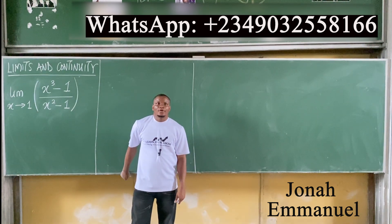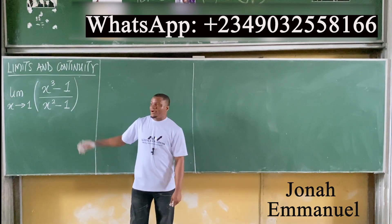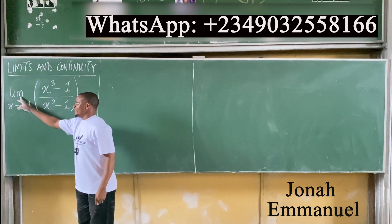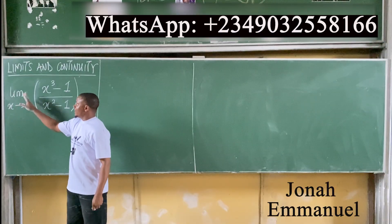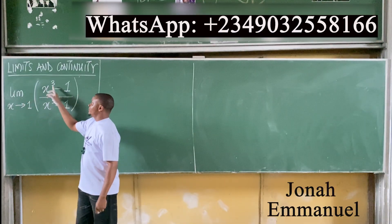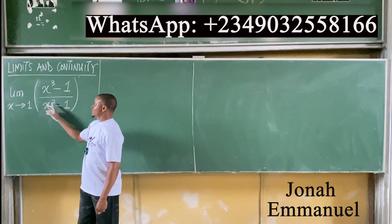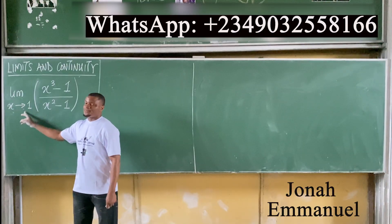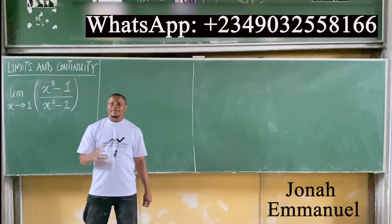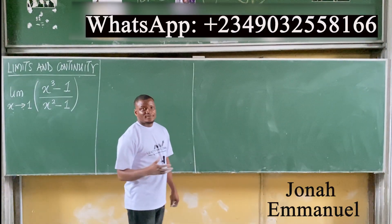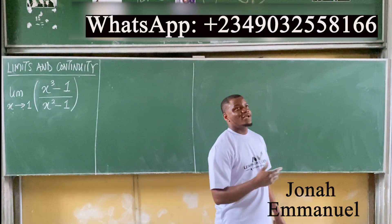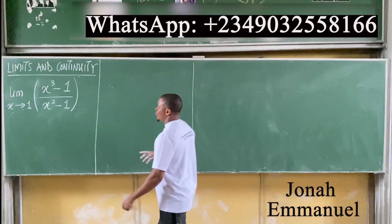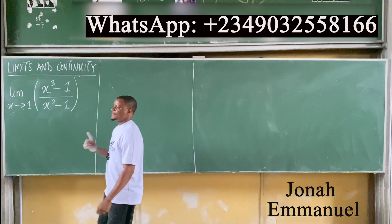All right, look up please. Here was your question: evaluate the limit of x cubed minus one all over x squared minus one as x approaches one. Now to solve this, listen up please — your solution is dependent on first things first.